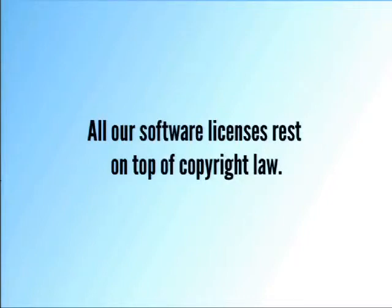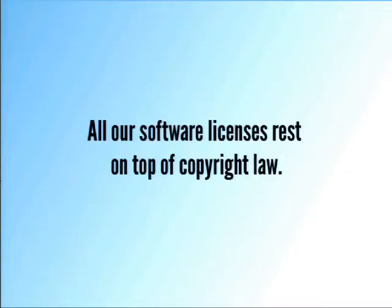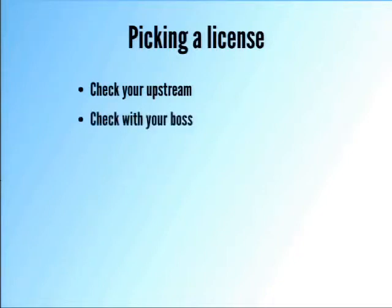The way you get copyright is you just write it — you don't have to register it, although it doesn't hurt to put a copyright notice in there so people understand your intent. All of our licenses rest on the fact that you've written it, you get default copyright, and then you can add additional permissions, responsibilities, and requirements on top of default copyright. So how would you pick a license? The decision tree I'd think of: check your upstream. If you're submitting a small patch to a much larger project, it's considered obnoxious to pick a completely different license.